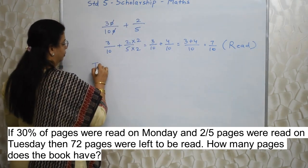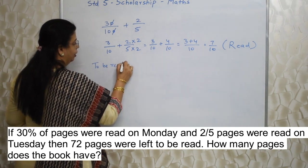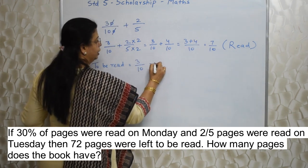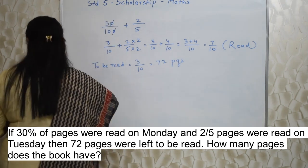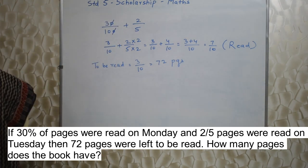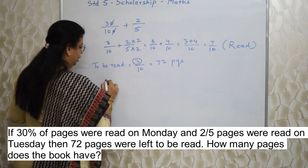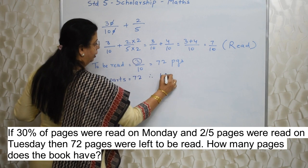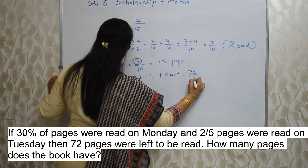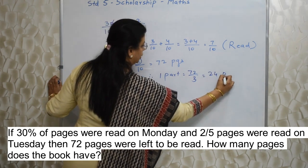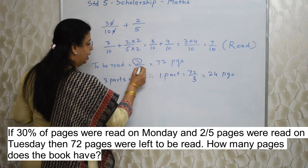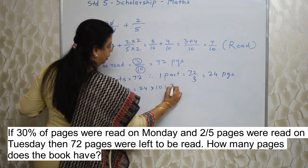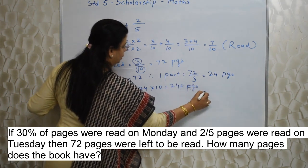So 7 upon 10 of the book is already read, which means 3 upon 10 is yet to be read. That 3 upon 10 equals 72 pages as given in the question. So 3 parts equal 72. Using the unitary method, 1 part equals 72 upon 3, which is 24 pages. And total is 10 parts, so 10 into 24 equals 240. That book has 240 pages.